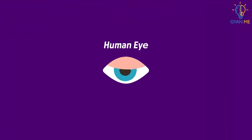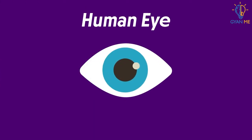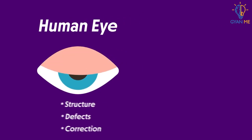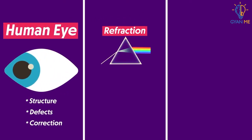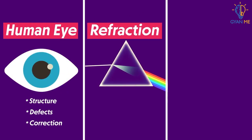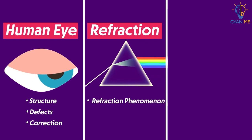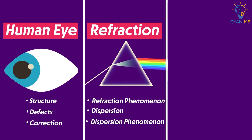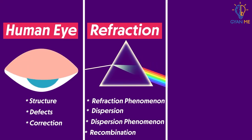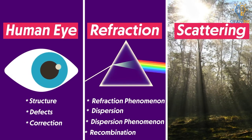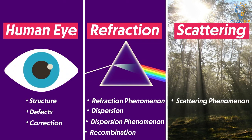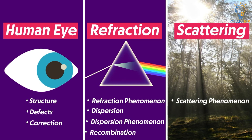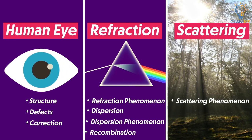So all of these — starting with the human eye, its structure, its defects and correction, and bending of light that is refraction, phenomena associated with refraction such as dispersion and its phenomena, recombination and scattering of light and phenomena associated with it — we will all study them in detail in this chapter. See you in the next video.